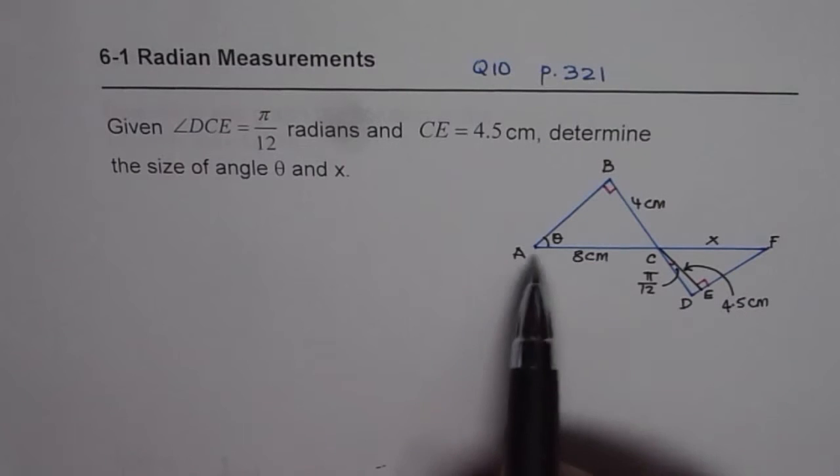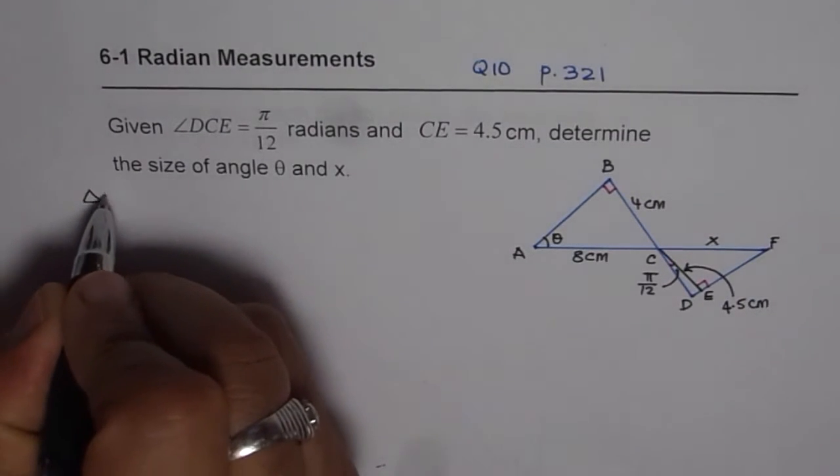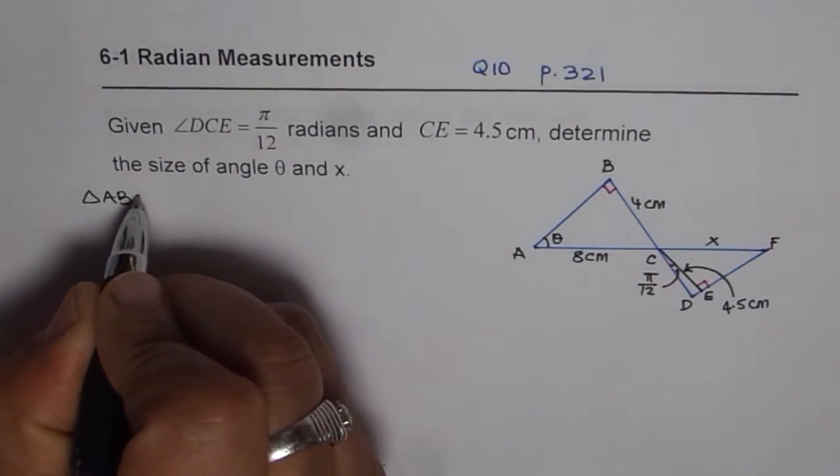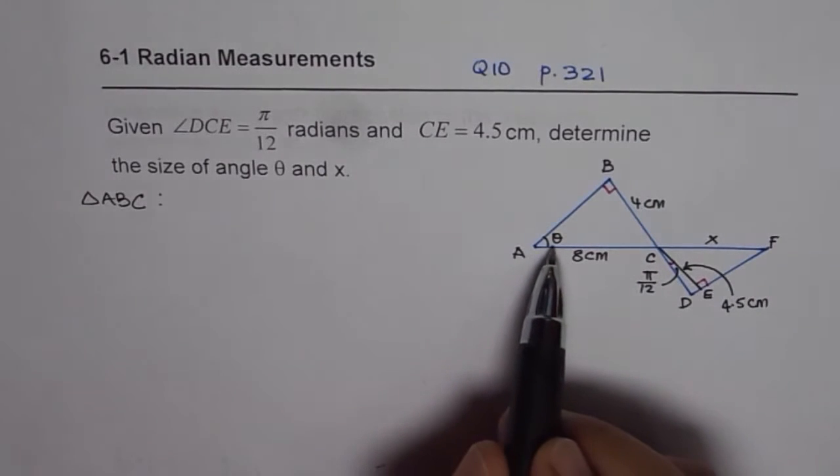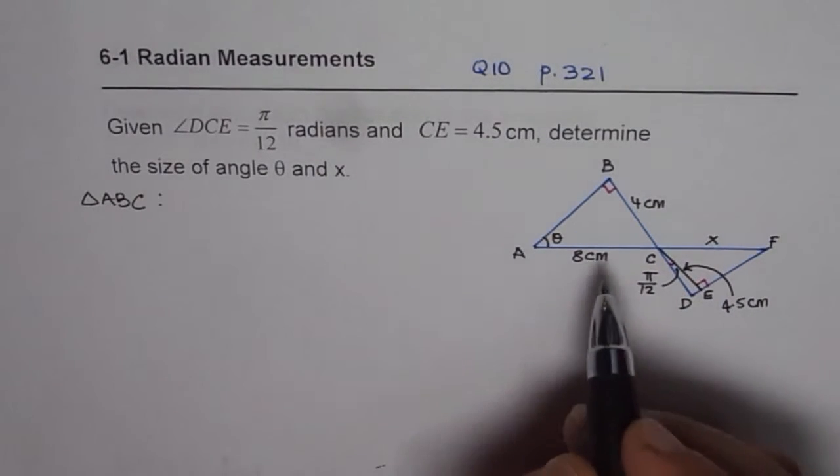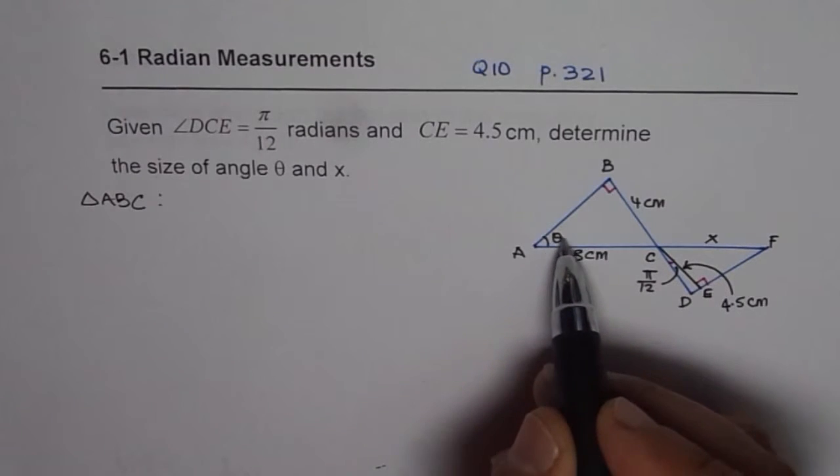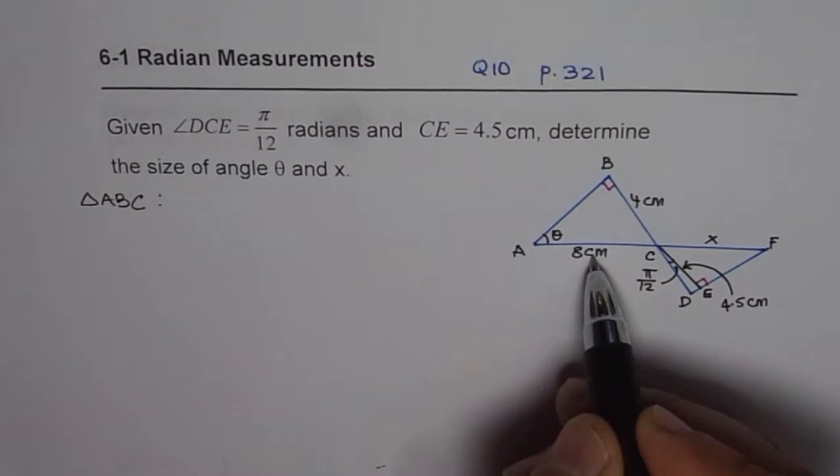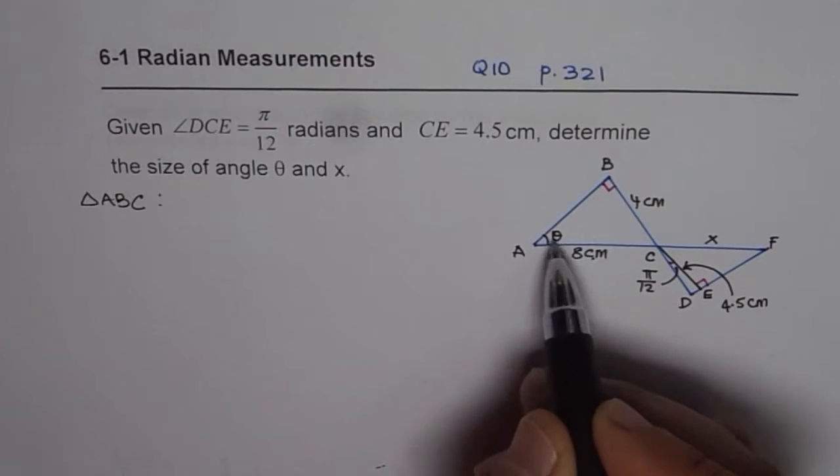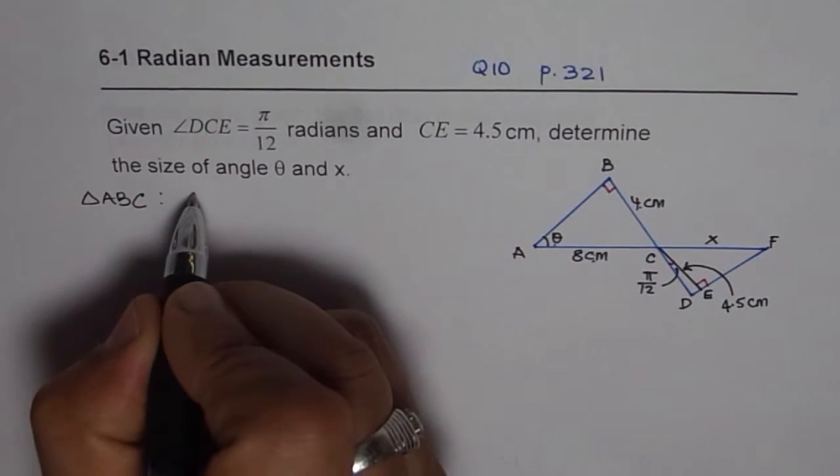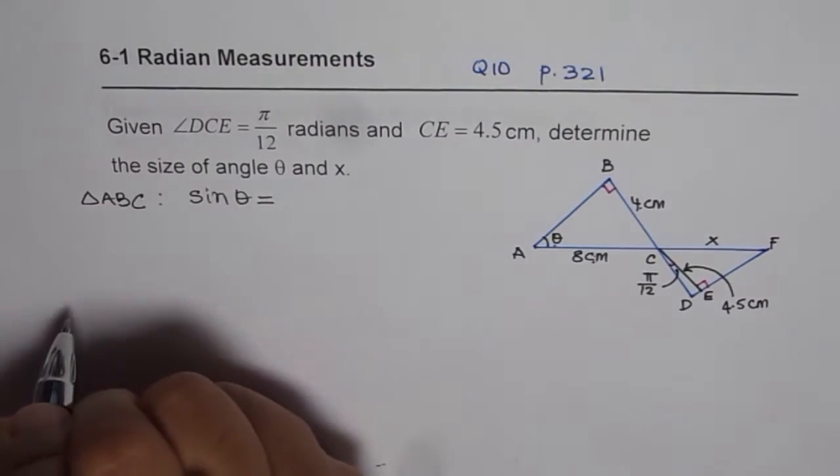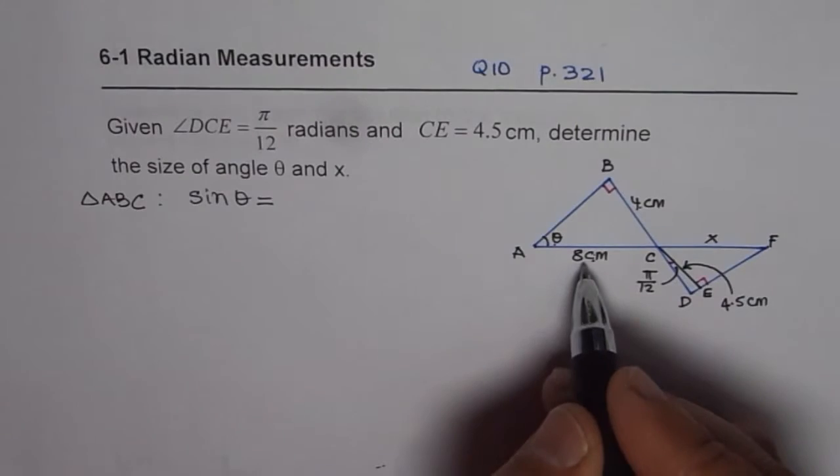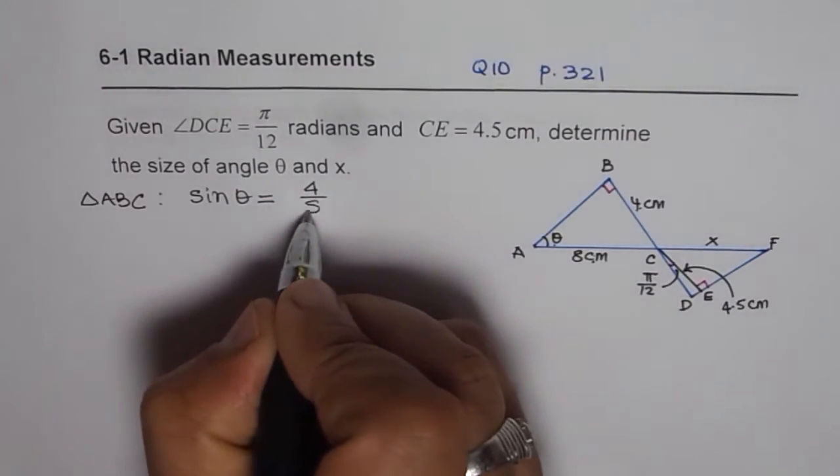Let's begin by solving the triangle ABC which is a right triangle. In this particular triangle, angle θ is something which we need to find. Since we know the opposite side and the hypotenuse, we should use sine of θ. So sine θ is equal to opposite side over hypotenuse, which is 4 over 8.